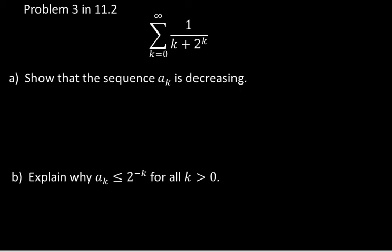For problem three, remember we're always thinking of two sequences. Part A says: show that the sequence A sub K is decreasing. Notice that A sub K is definitely going to zero, so this series may converge. If A sub K is decreasing, that means A sub K is bigger than A sub K plus 1. The way to see if a sequence is decreasing is to compare two terms: A sub K is 1 over (K plus 2^K), and A sub K plus 1 is 1 over (K+1 plus 2^(K+1)).